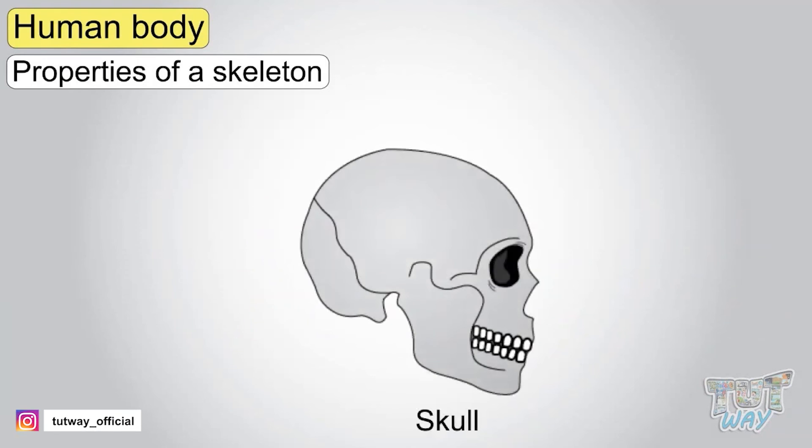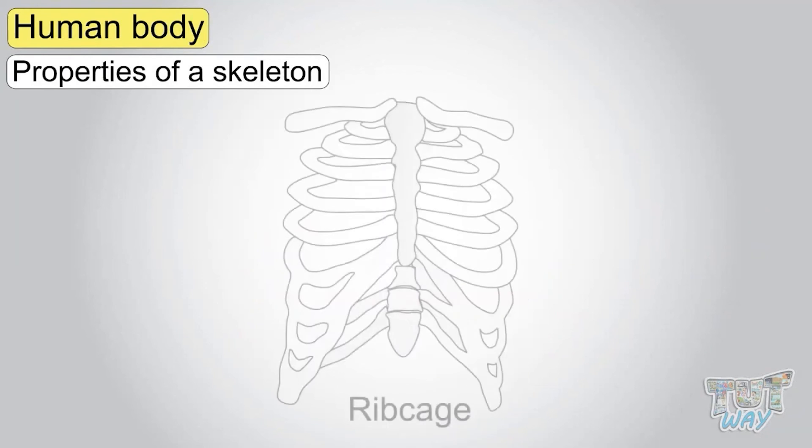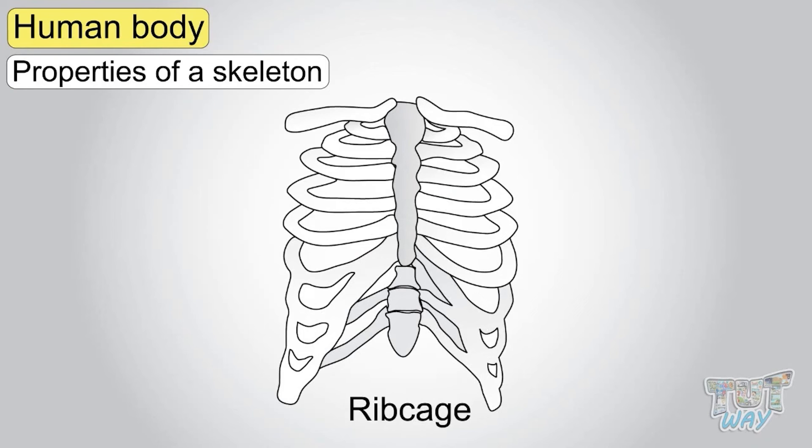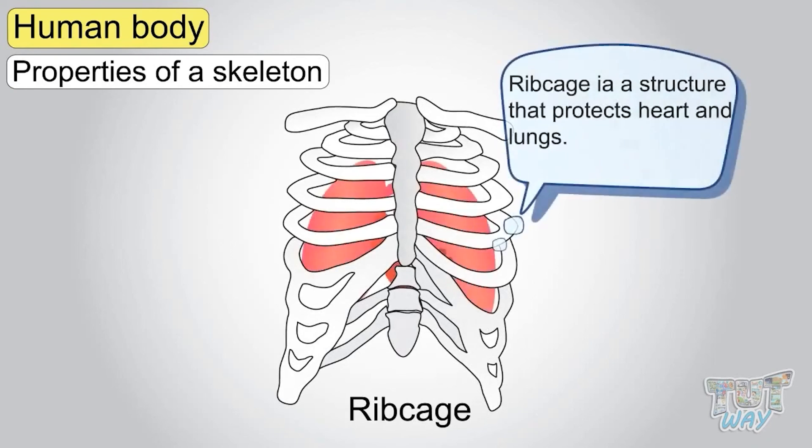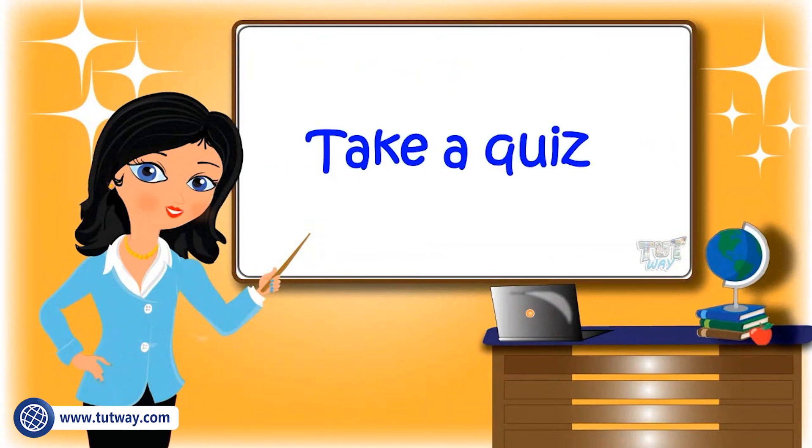Our skull is a hard structure like a coconut to protect the soft internal organ that is a brain. Our rib cage is like a strong cage for delicate organs like heart and lungs. So kids, nature has provided best materials for our body and we learn how structures are all around us and help us in our daily life. Now go ahead and take a quiz to learn more! Bye-bye!